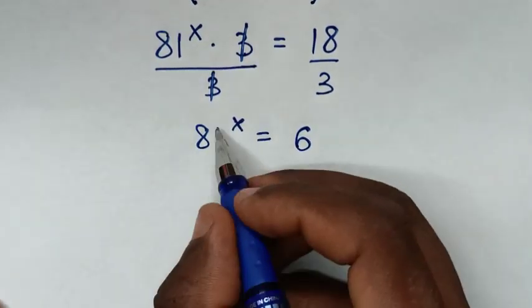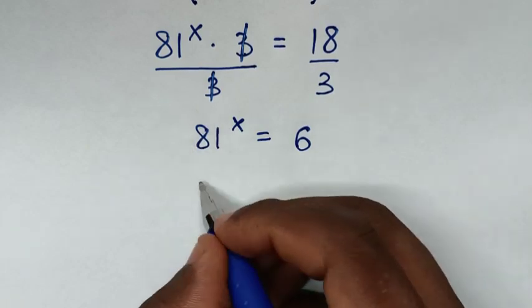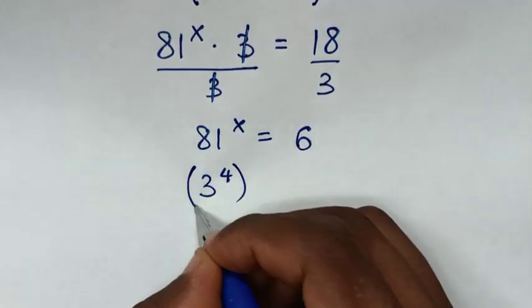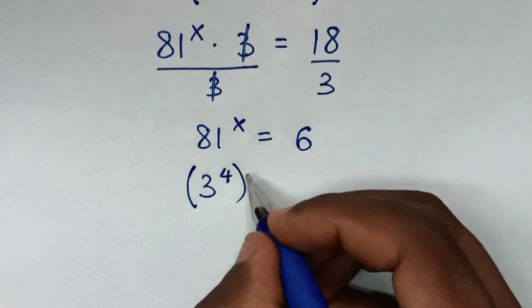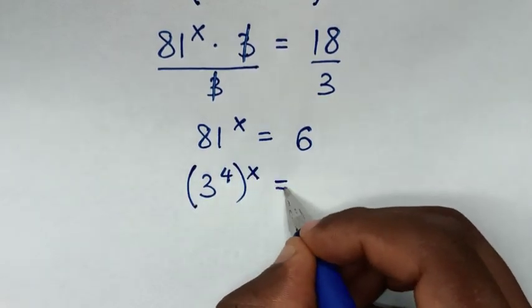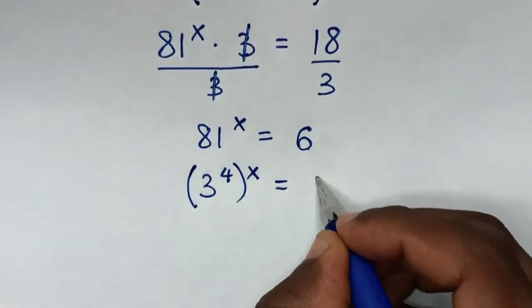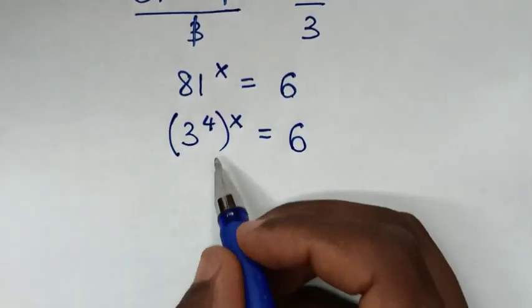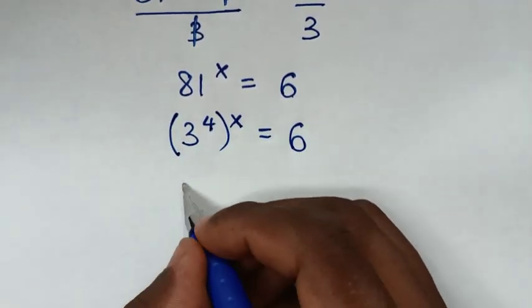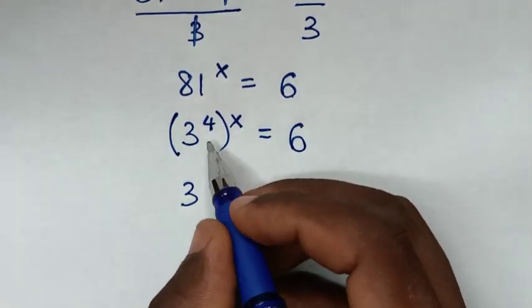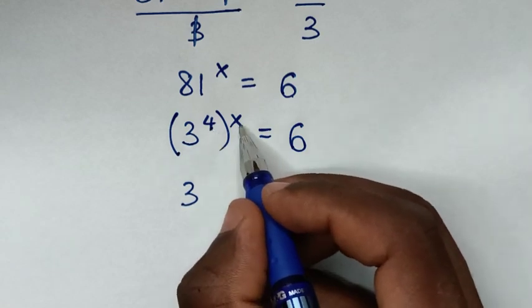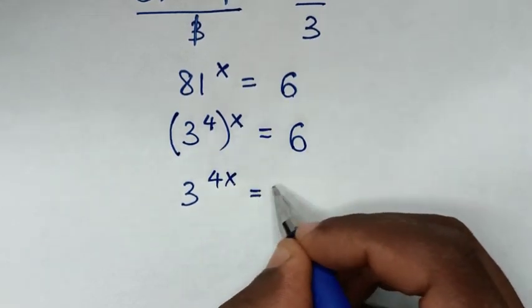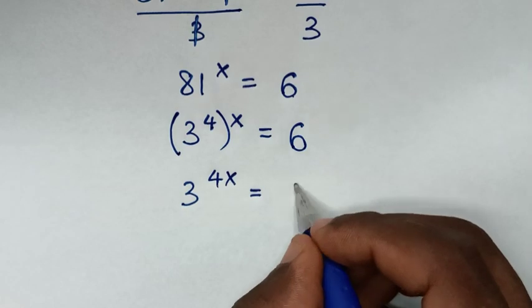Then in the next step, 81 is the same as 3^4. So (3^4)^x is equal to 6. Then we'll open the bracket, so it will be 3^(4x) is equal to 6.